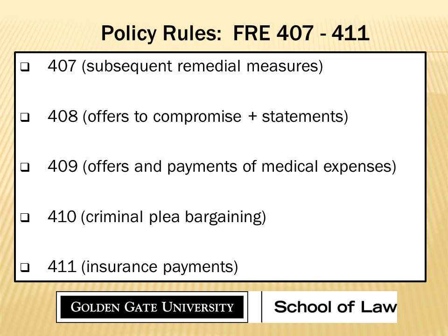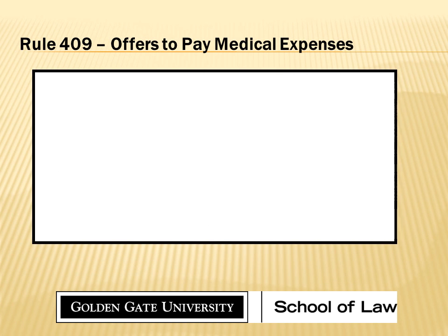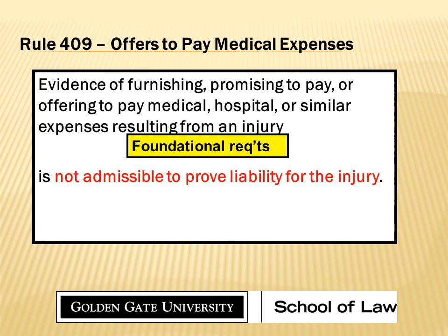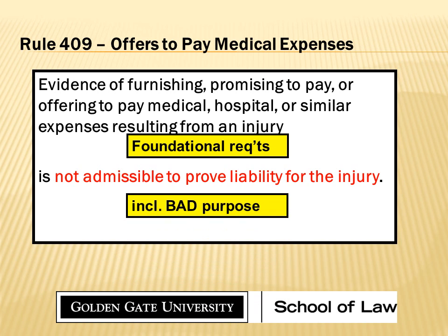That's what we're talking about. And remember, especially as demonstrated through these policy rules, among those elements that belong to the opponent, most always one of which is the ill purposes — the bad purposes for which we think the proponent is trying to introduce this evidence. We talked about offers to pay medical expenses before, and that was a good demonstration: there are some foundational requirements, essentially two of them — there's evidence of promising to pay medical expenses admissible for that bad purpose of proving liability.